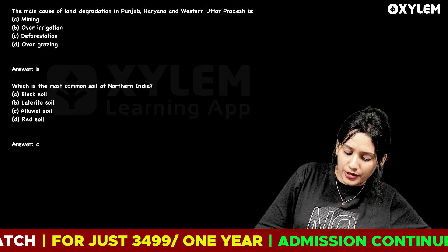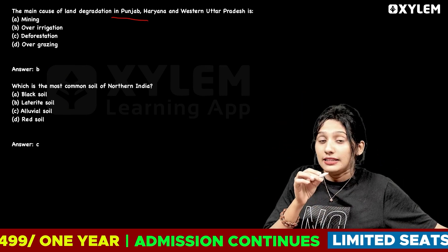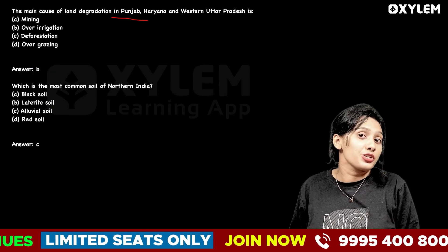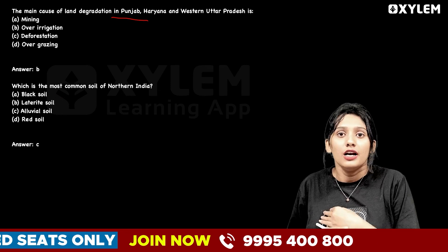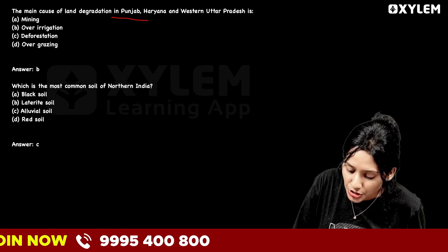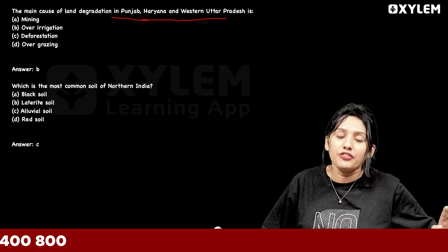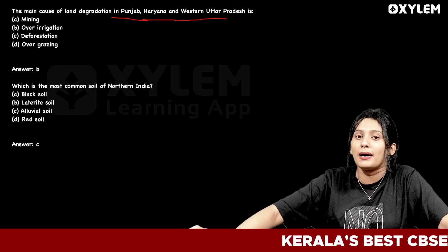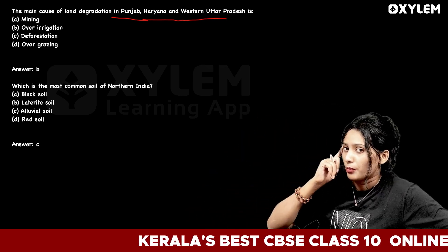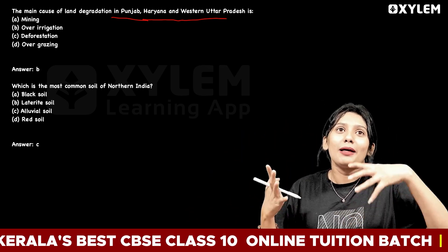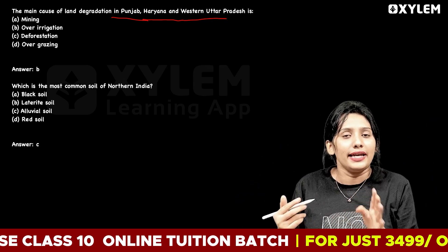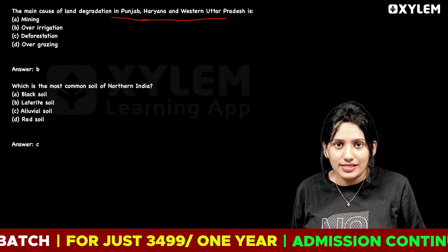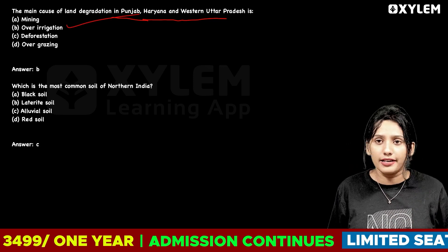The main cause of land degradation in Punjab is over-irrigation. In Punjab, Haryana, and Western Uttar Pradesh, if we talk about land degradation, the cause is over-irrigation — not mining, deforestation, or over-grazing. Option B, over-irrigation, is the correct answer.